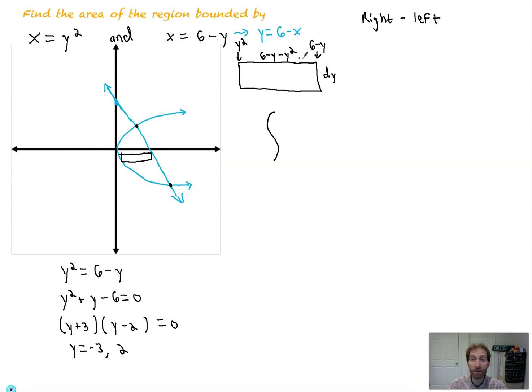the right curve minus the left curve. That's going to give you the length of this rectangle. So that's 6 minus y. That's the rightmost curve minus the leftmost curve.